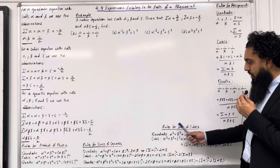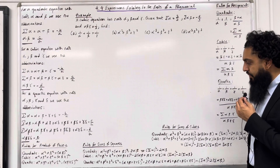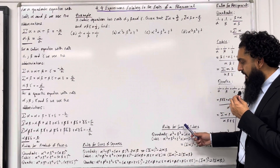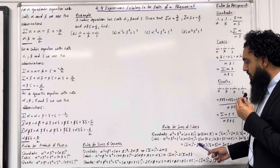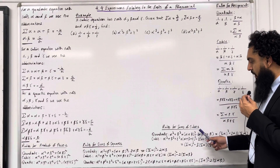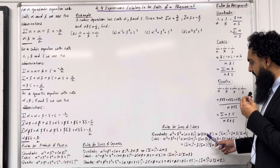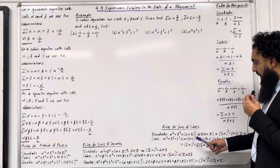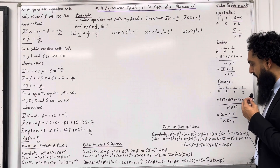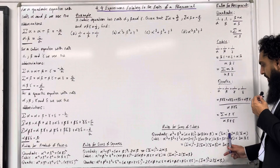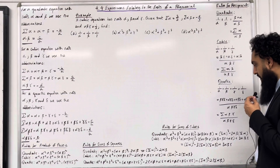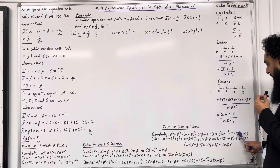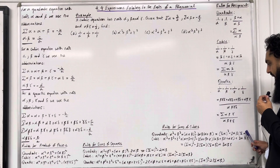Next up we have rules for sums of cubes. For a quadratic, alpha cubed plus beta cubed is equal to (alpha plus beta) cubed minus three lots of alpha beta multiplied by (alpha plus beta). We know that alpha plus beta is the same as writing sum of alpha, so we can write (sum of alpha) cubed minus three lots of alpha beta multiplied by sum of alpha.